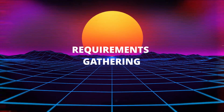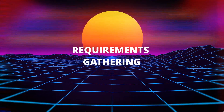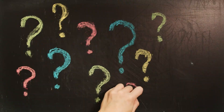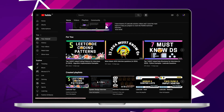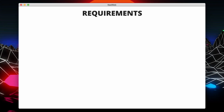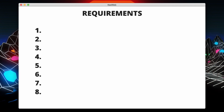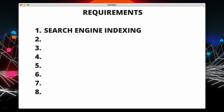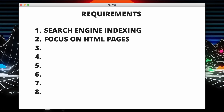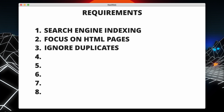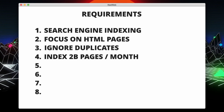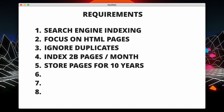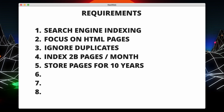Before jumping into the system design, we need to gather functional and non-functional requirements, and we can do this by asking questions to the interviewer. I have made a whole separate video on this topic, feel free to check it out. Here is a list of requirements for our web crawler. We want our crawler to be performing search engine indexing. We want our system to focus on HTML pages. Pages with duplicate content should be ignored. We want to crawl 2 billion pages per month. Parsed HTML pages should be stored for at least 10 years.